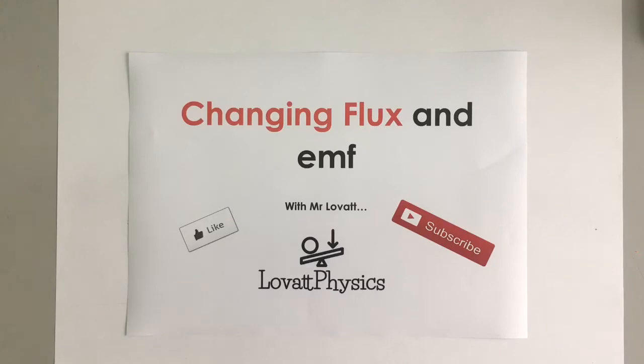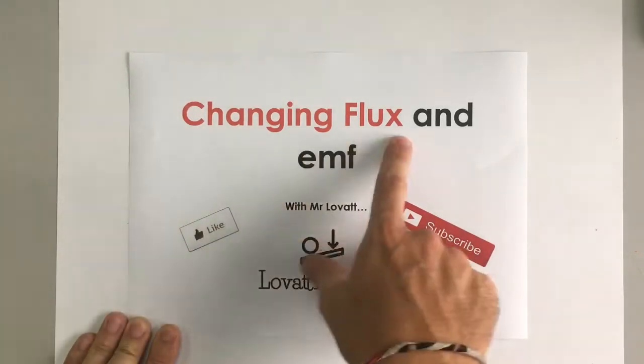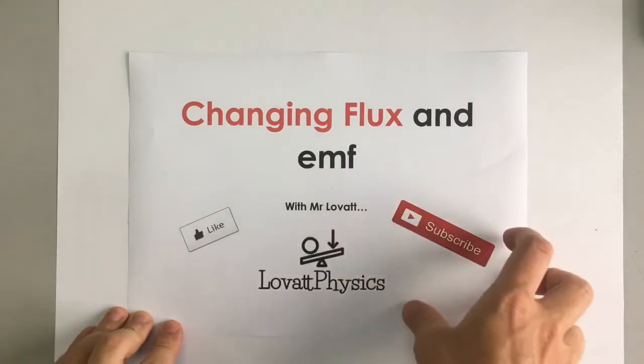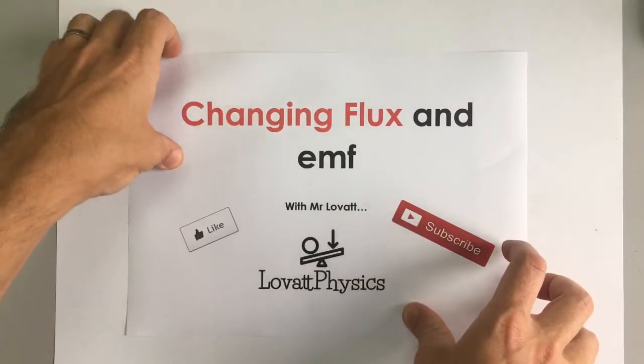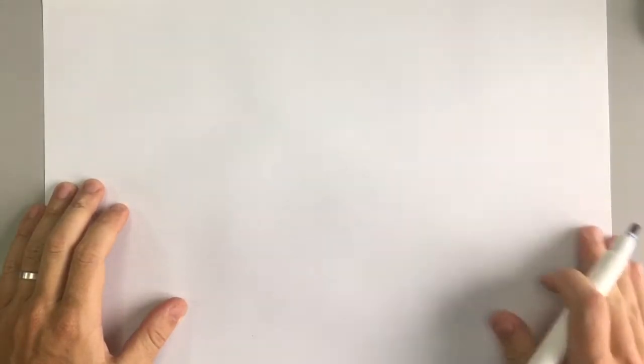This is a Love at Physics video for IB higher level topic 11 on changing magnetic flux and EMF. In the previous video we saw that magnetic flux and magnetic flux density are related to the strength of a magnetic field in a particular area.